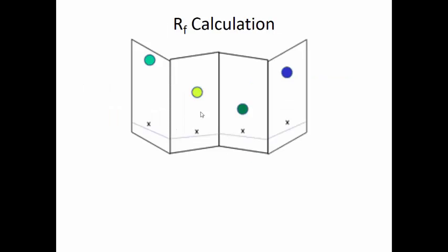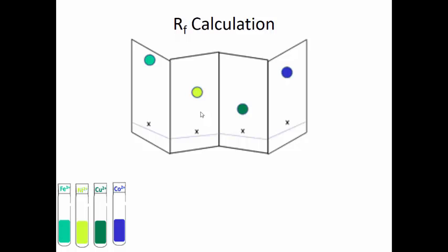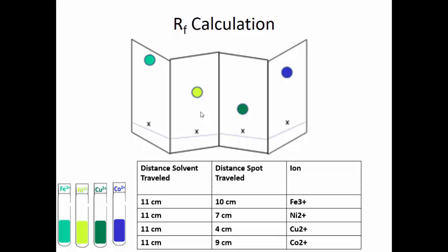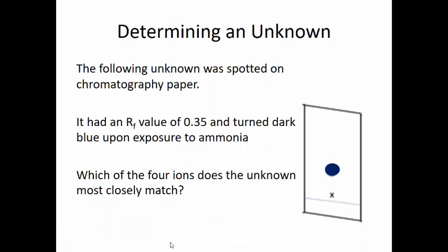Let's look at our plate again. Here are the compounds: iron, nickel, copper, and cobalt, in that order. Here's a table with the different ions, the distance that they travel, and the distance that the solvent travels. You're going to have to go in and calculate these RF values on the quiz that you'll take after watching this video.